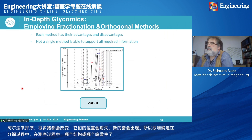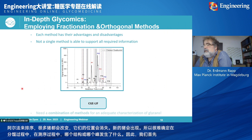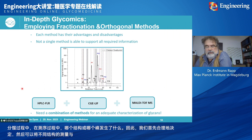Therefore, we first fractionate complex samples into, for example, 15 fractions, and can then combine measurement of different structures with one, two, or even three methods.